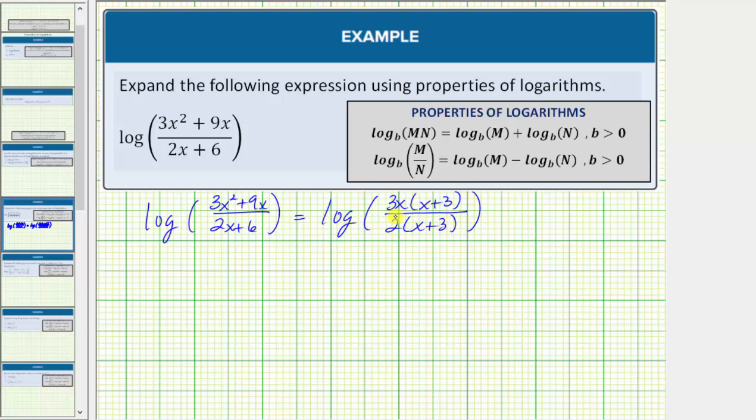Notice in factored form, the rational expression simplifies because the quantity x plus three divided by the quantity x plus three simplifies to one. The logarithm simplifies to log of three x divided by two.